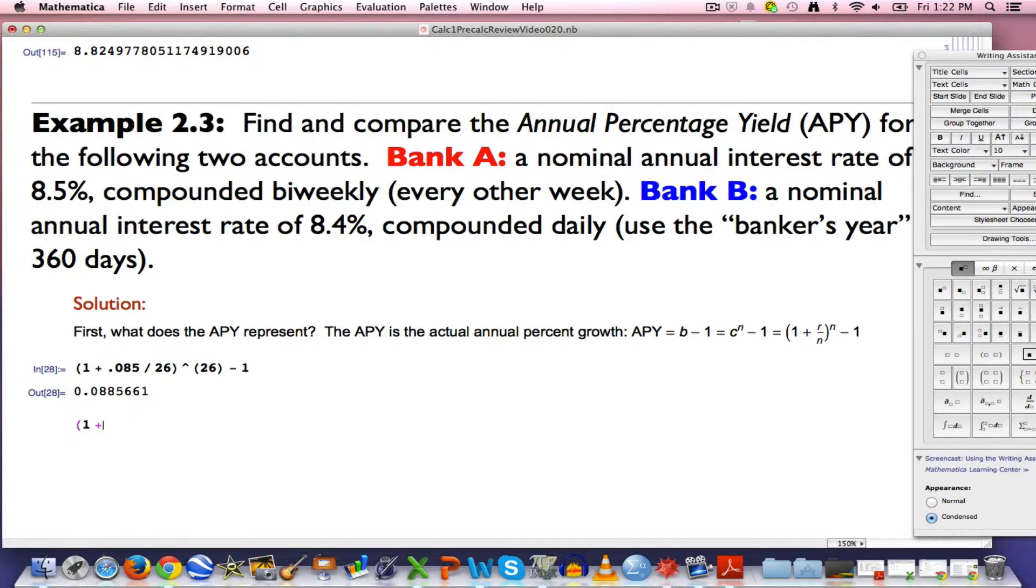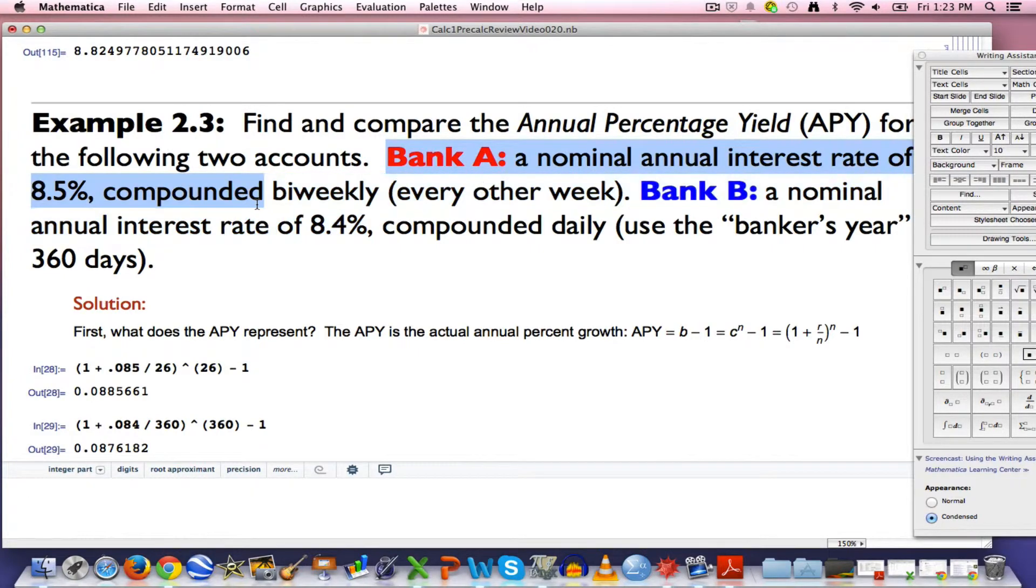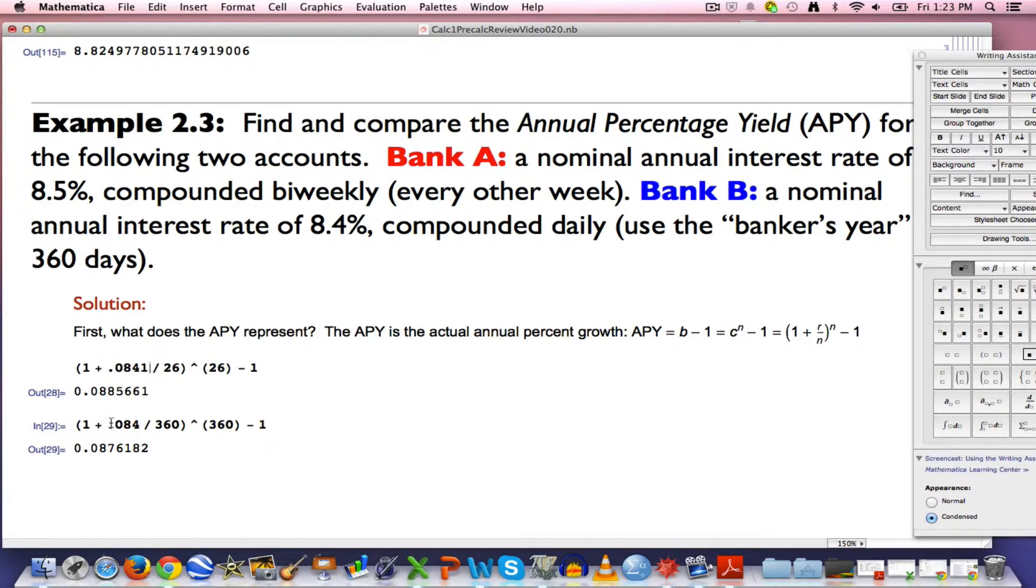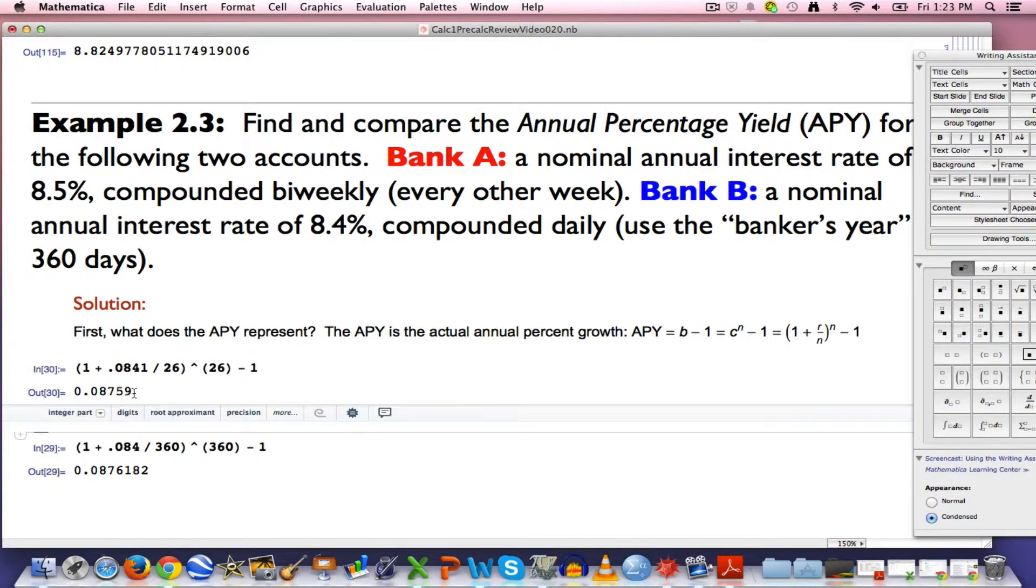What about bank B? It's got a lower interest rate but compounded many more times per year, 360 instead of 26. You might expect that to have a big effect, but n actually doesn't have as big of an effect as you might expect. The interest rate has a bigger effect. This very well could be smaller than 8.86%. It is, 8.76%. So bank A is better. If I change the nominal annual interest rate to 8.41% instead of 8.5%, that's probably now worse than bank B. Yes, it's a little bit worse.